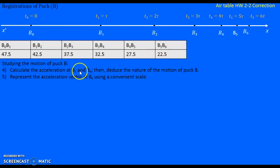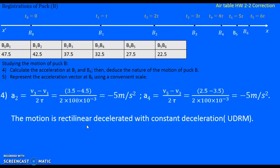Calculate the acceleration at B2 and B4. Then deduce the nature of the motion of puck B. So acceleration aB2 is vB3 minus vB1 over 2τ. And we do the substitutions, changing the values into SI units. We obtain -5 meters per second squared.